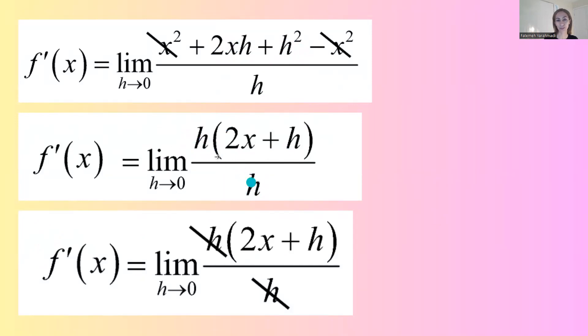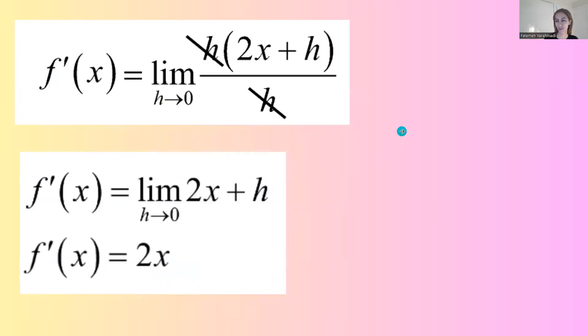Now you're allowed to cancel out the common factor, and you're left with the limit of 2x plus h as h goes to 0.